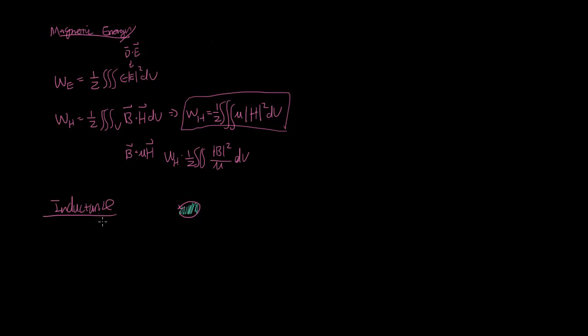And the basic formula for the inductance in a system will be equal to the amount of flux going through this surface area divided by the current that it took to create that kind of flux. Another way to write this flux would be the magnetic flux density integrated over the surface divided by the current.